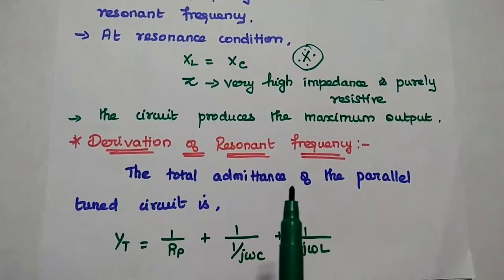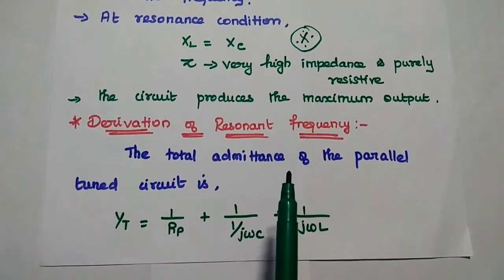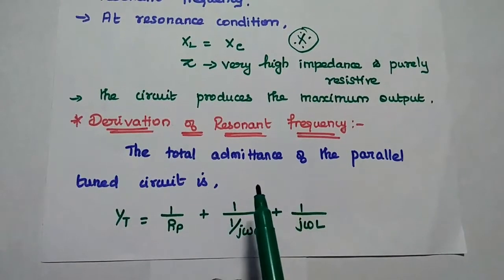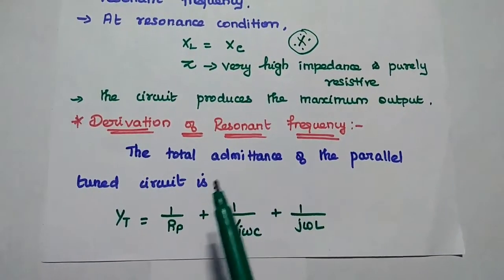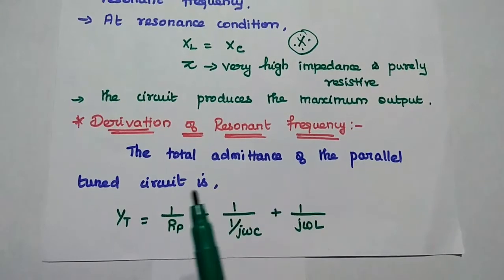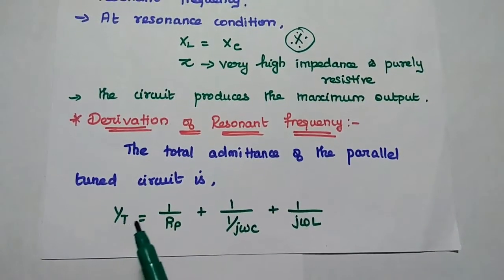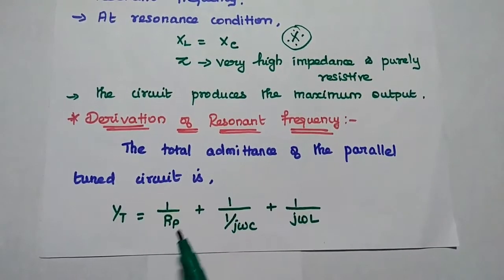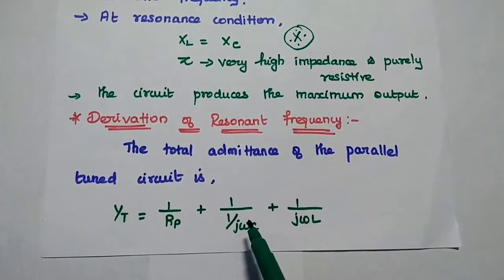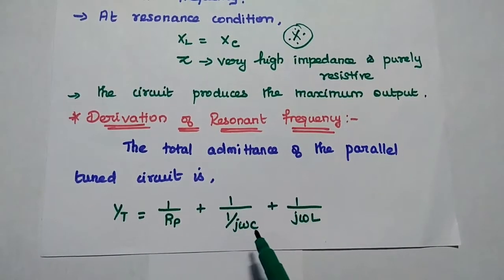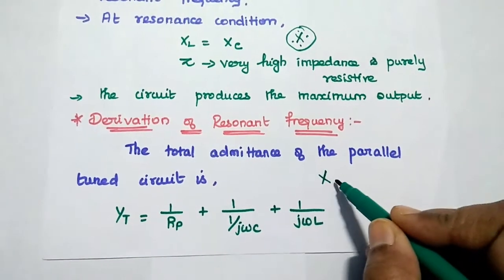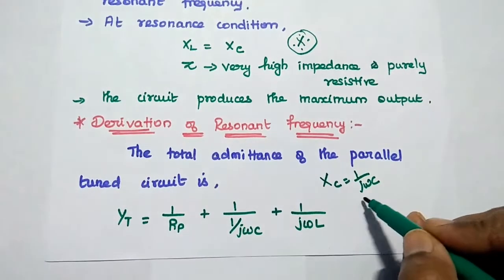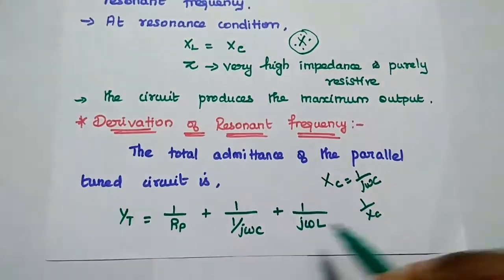Next, we are going to derive the resonant frequency for this parallel resonant circuit. For analyzing the parallel circuit, we have to consider the admittance value. The total admittance of the parallel tuned circuit is given as: Yt equals 1 by Rp. This is the admittance of the parallel resistance. Then we add 1 divided by (1 by j·omega·C). As we know, Xc equals 1 by j·omega·C, so admittance means 1 by Xc.